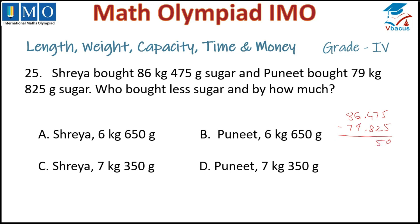and 14 minus 8 — borrow — 6; again borrow, 15 minus 9 is 6. So the difference is 6 kg 650 grams, and Puneet bought less sugar. Option B is correct. Tick option B: Puneet, 6 kg 650 grams.